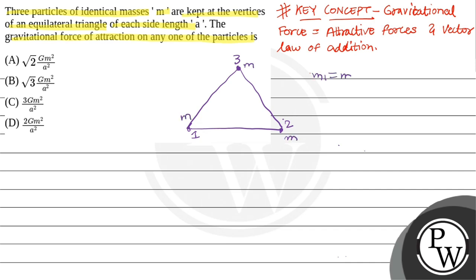So now M1 equals M2 equals M3 equals M, and three sides we have A, so R equals A. If we have a force on any one, we have to take 1.